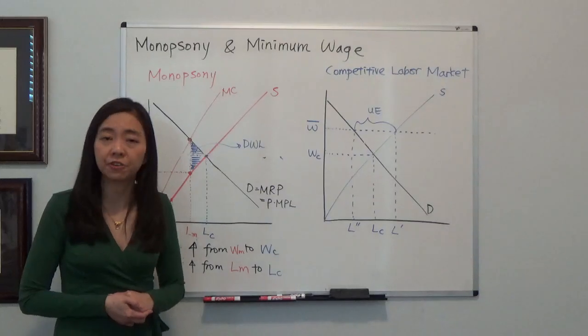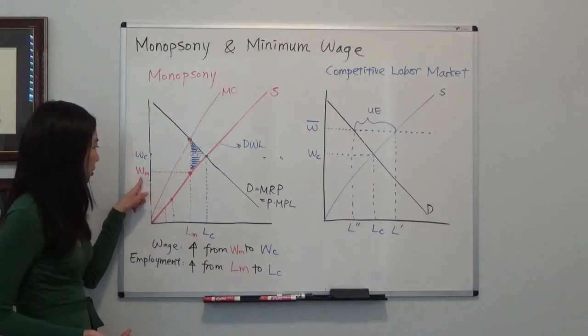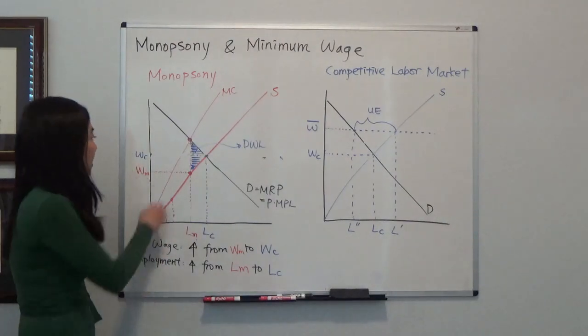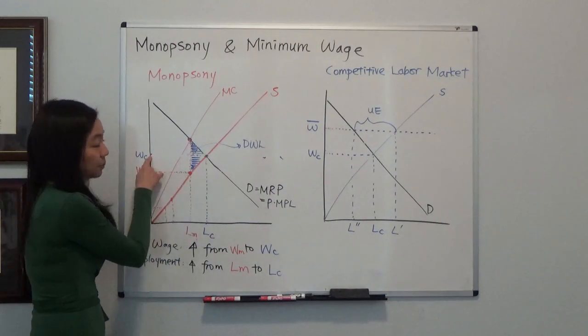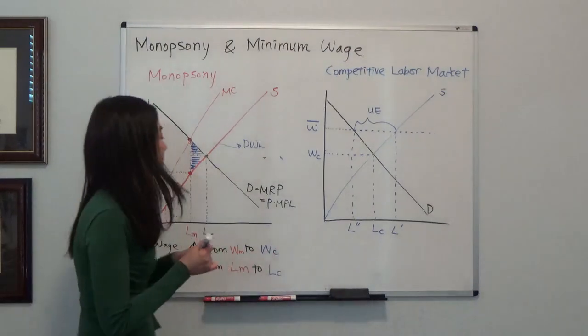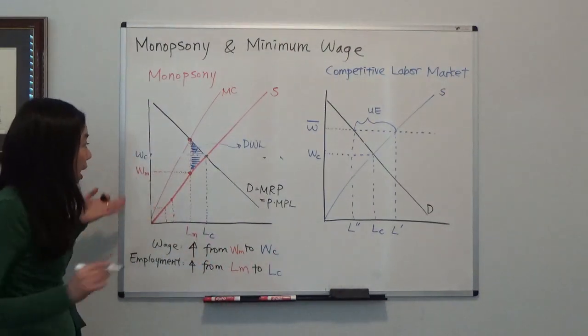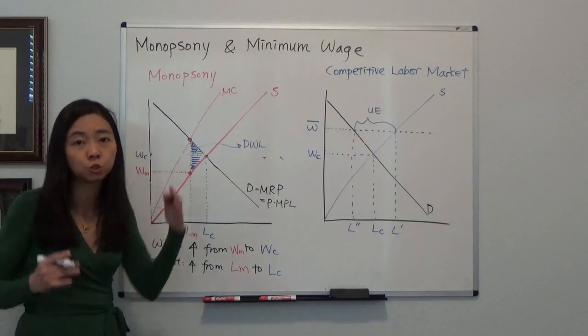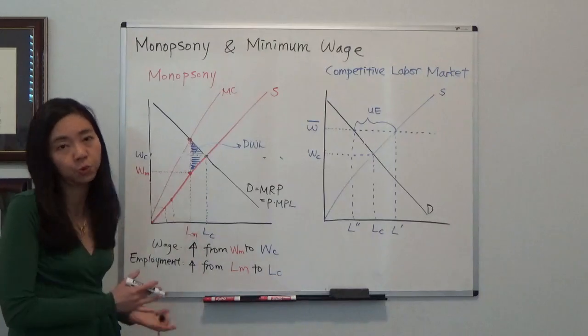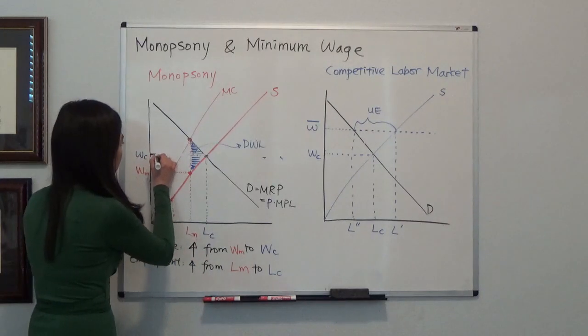So suppose we have a government coming in and saying, hey, paying such a low wage is unfair. You have to pay a minimum wage that is at the competitive level at WC. So in that case, they change the picture of the monopsony. Because now, if you have to pay WC to each worker, doesn't matter how many workers you hire, doesn't matter how few workers you hire, you have to pay WC.